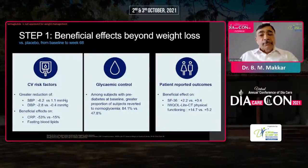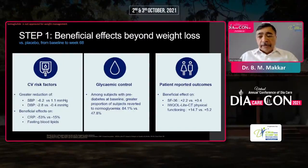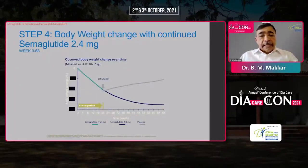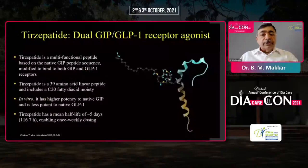Other beneficial effects beyond weight loss include improvement in cardiovascular risk factors with reduction in blood pressure, improvement in hsCRP level, improvement in glycemic control, and overall benefit in quality of life. STEP 4 showed that ongoing therapy with semaglutide led to sustained reduction of weight, which otherwise tends to go up once you discontinue therapy.